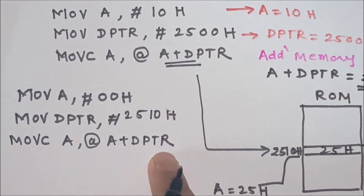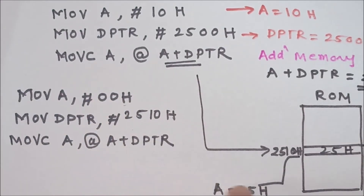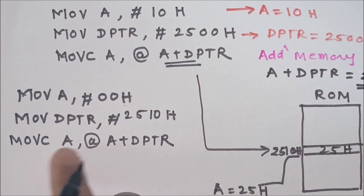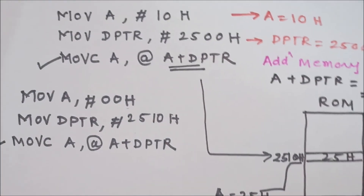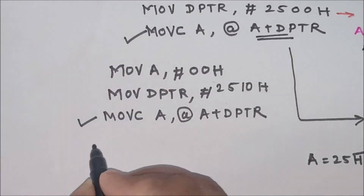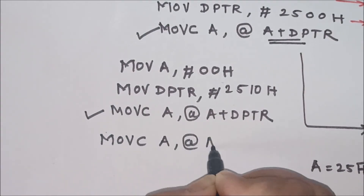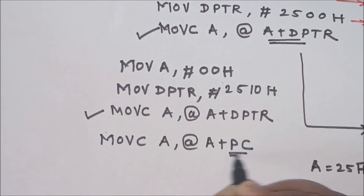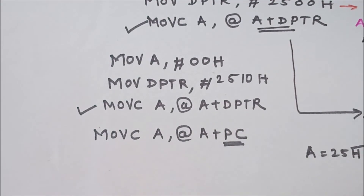The microcontroller computes the address by adding 2510h with 00h, giving 2510h. It points to this memory location, reads the data, and stores it in the accumulator. One more instruction format is used to read data: MOVC A, @A+PC. Here, the contents of the program counter are added to the accumulator and the result is stored in the accumulator. The PC register can also be used to read contents of ROM memory, with special applications discussed while writing a program.